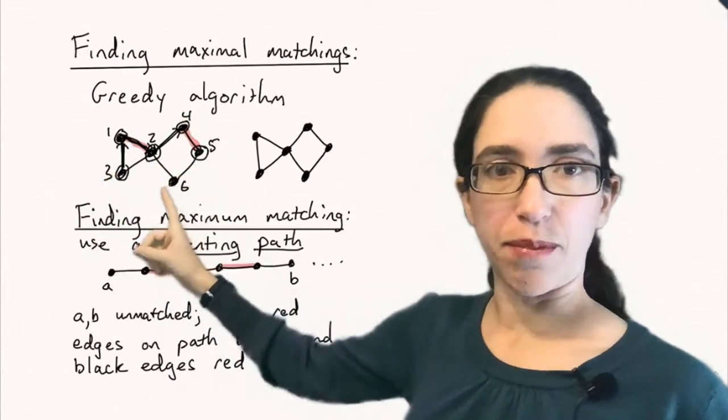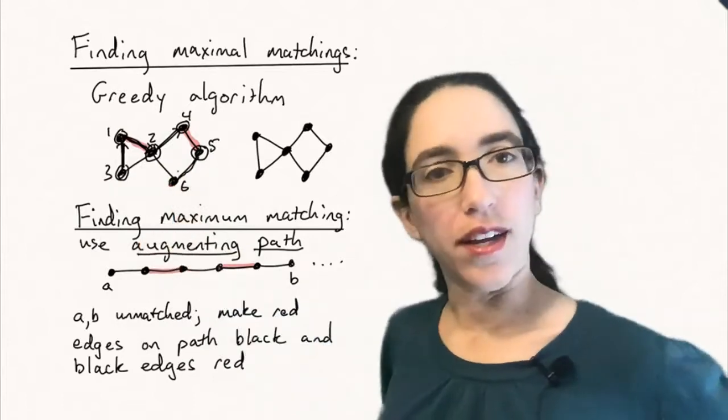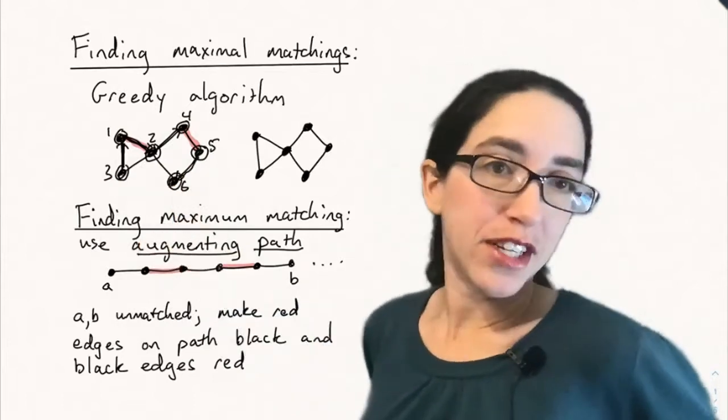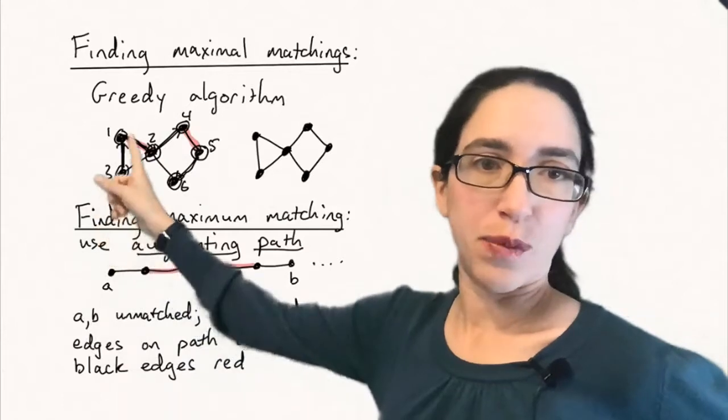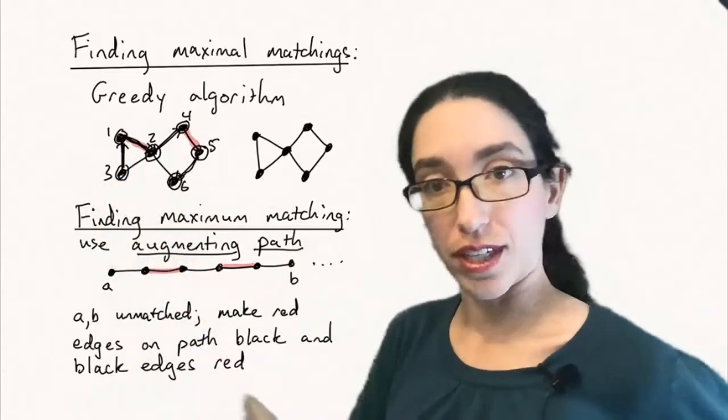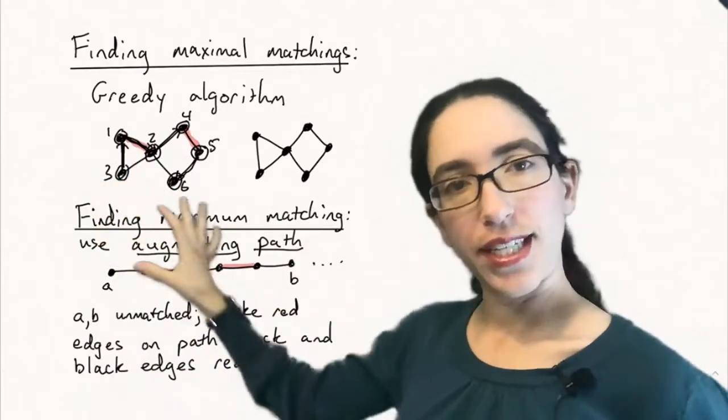And then black, and that would be a nice augmenting path. I could have made it shorter as well. I could have done three, one, two, six. That's just a shorter example of an augmenting path. But let's take this longer one. Three, one, two, four, five, six.